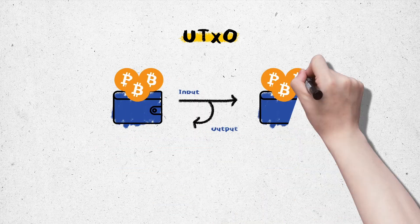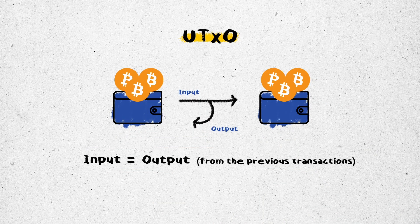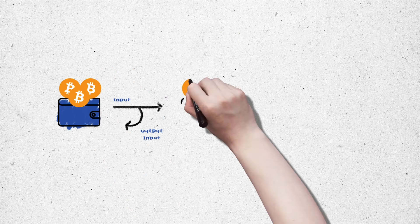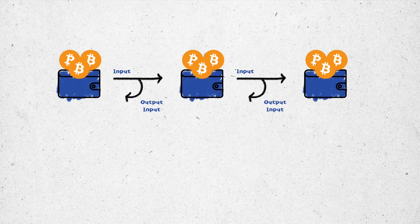To understand the Extended Unspent Transaction Output, first let's get to know the Unspent Transaction Output — the UTXO model of Bitcoin. In the UTXO model, a transaction always has input and output. The input is seen as the Unspent Output from the previous transactions.